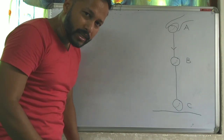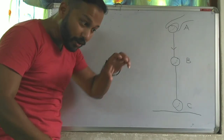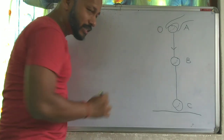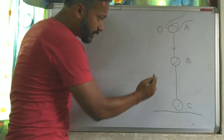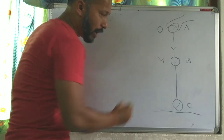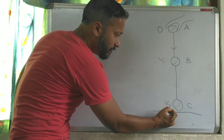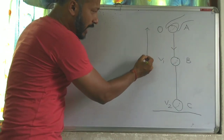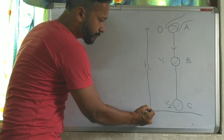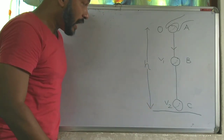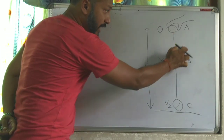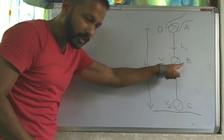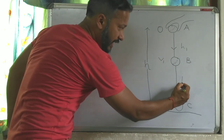Now, what is the velocity of this ball at A when you are holding it? Zero — the velocity of the ball at A is zero. The velocity at B is V1, and the velocity at C is V2. The total height from the ground to A is H. The height from A to B is H1, and from B to C is H2.